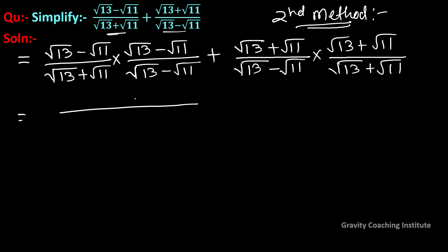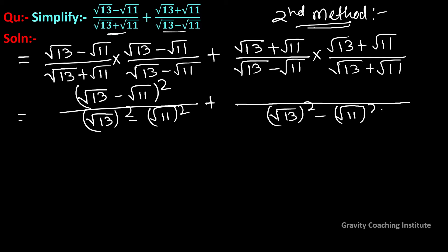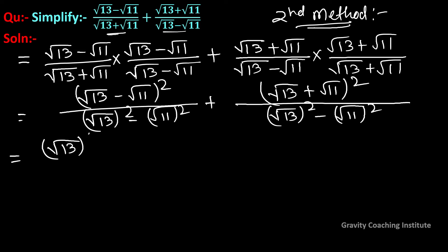Using the identity (a + b)(a - b): the denominator becomes (√13)² - (√11)² = 13 - 11 = 2. The numerators give (√13 - √11)² and (√13 + √11)² respectively, which expand to 13 - 2√(13×11) + 11 and 13 + 2√(13×11) + 11.